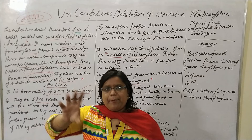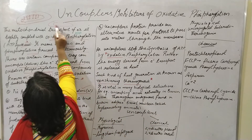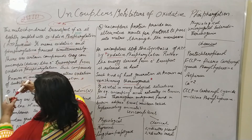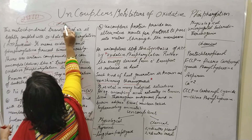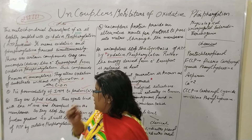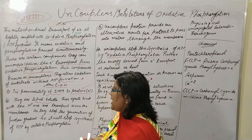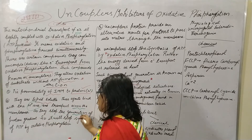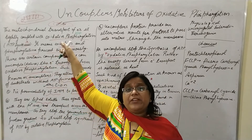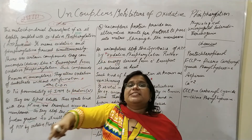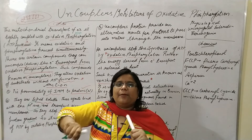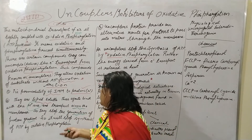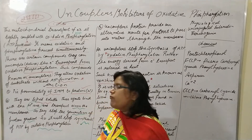The uncouplers embed into the inner mitochondrial membrane, take the protons, and release them into the matrix side. These agents bind hydrogen ions — that is, protons — and transport them across the membrane, stopping the generation of the proton gradient. The proton gradient that must be created for ATP synthesis, which is compulsory for ATP synthesis, gets disturbed by these uncouplers. So they stop the synthesis of ATP by oxidative phosphorylation.